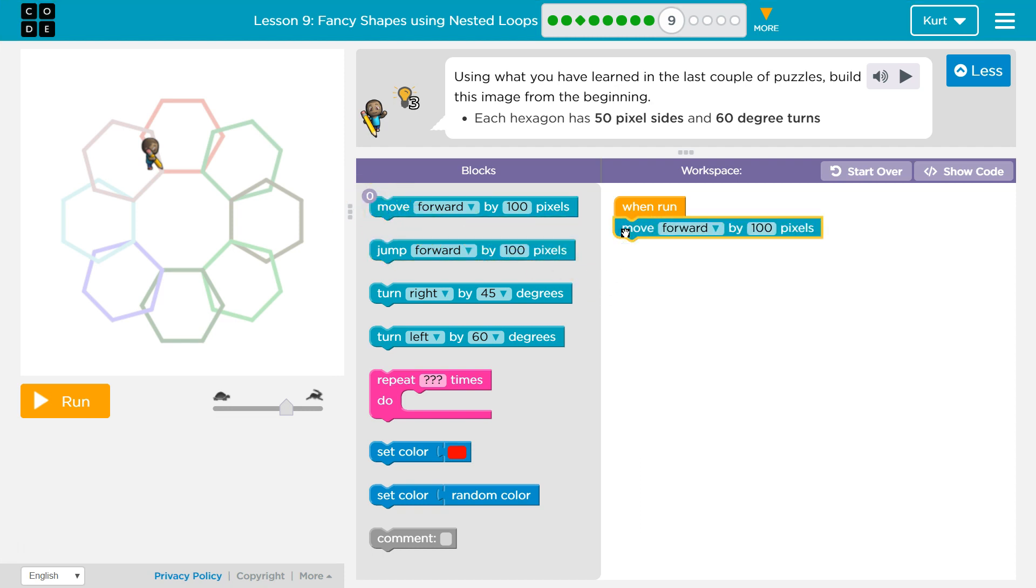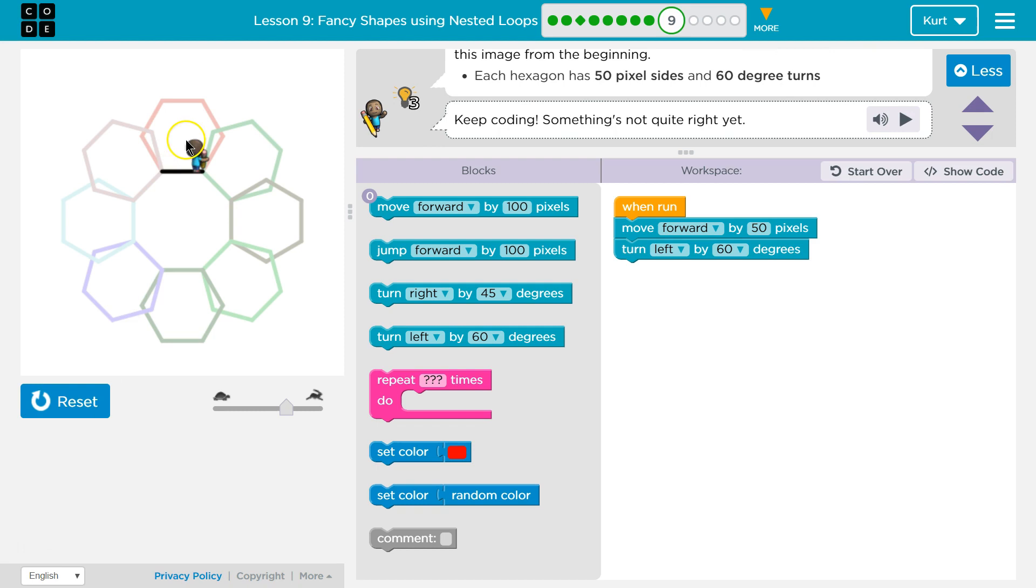Let's start by using that move forward. 50 pixel sides. All right. 50 and a 60 degree turn. And it looks like a turn to the left. Let's see what this looks like.